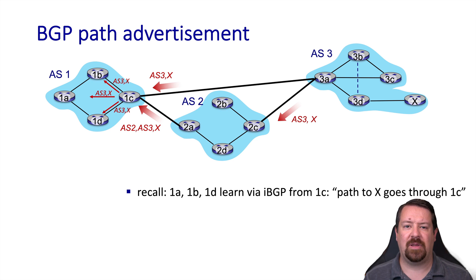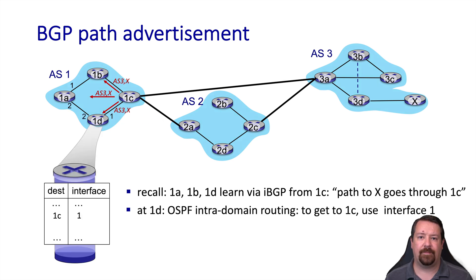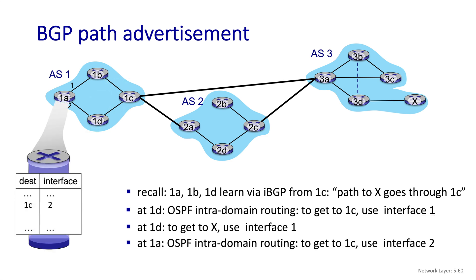Looking at what happens when a path is advertised through iBGP, routers 1A, 1B, and 1C all learn they can reach destination X through router 1C. So at router 1D, since interface 1 is used to reach router 1C, interface 1 will also be used to reach destination X. Likewise, at router 1A, if interface 2 normally reaches router 1C, interface 2 will also be used to reach destination X.